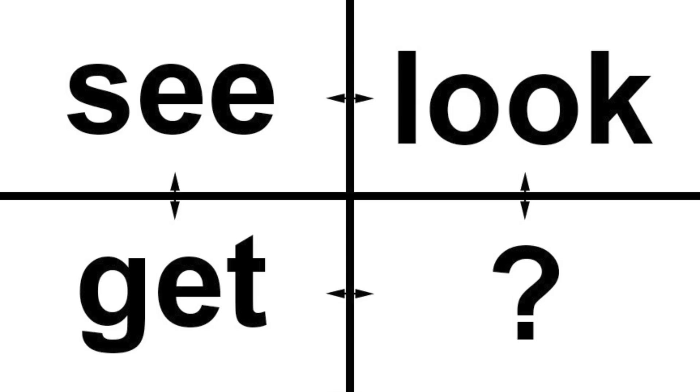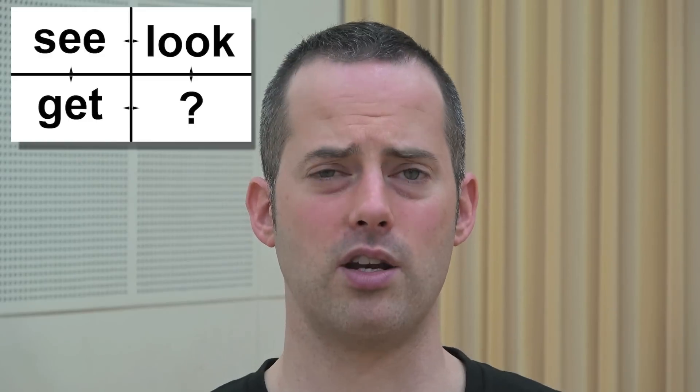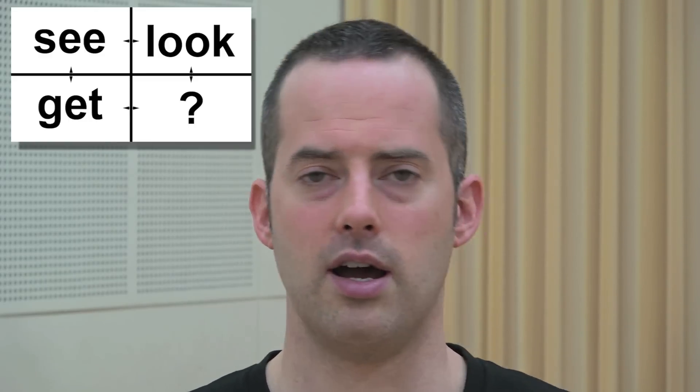Now let's get into this quiz. It's a simple problem if you expand your understanding of what these things mean. Let's look at the screen right now. We've got a couple of words up here: we've got 'see', 'look', we've got 'get', and we've got something else. So we want to know what's the connecting thing here.